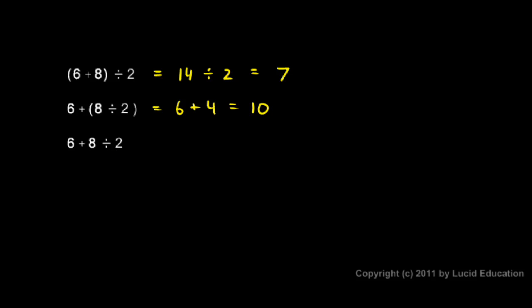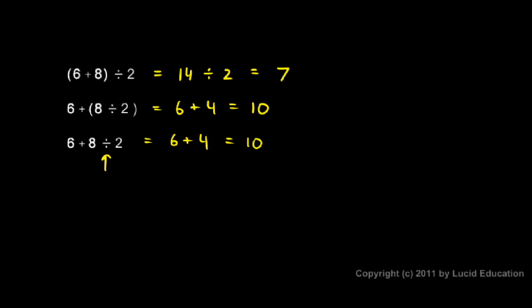This third example has no parentheses, so the rules for the order of operations tell me to do the division first before the addition. So I again think of this as 6 plus 8 divided by 2 — the division gets done first. This is just like the previous case: 6 plus 4 equals 10. In the absence of parentheses, it's just as if there were parentheses around the division part.